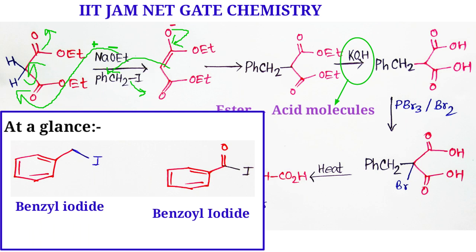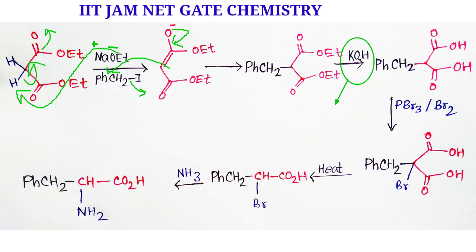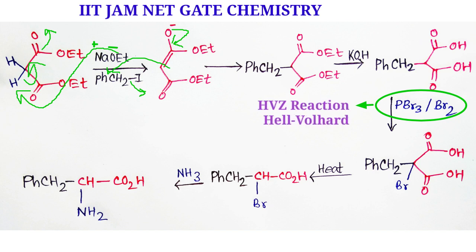The next reagent is very important: phosphorus tribromide and bromine molecule. It is the reagent for a well-known name reaction, the HVZ Hell-Volhard-Zelinsky reaction.